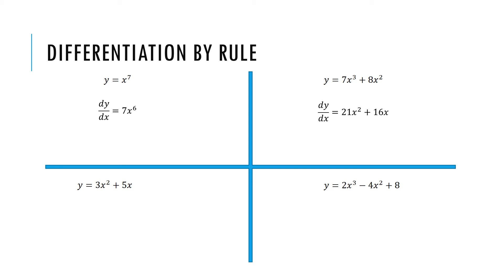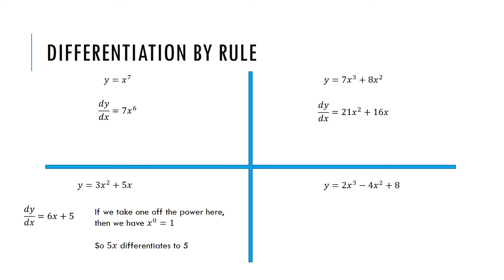Now the bottom left: y equals 3x squared plus 5x. The differential is 6x plus 5. I multiplied 3 by 2 to get 6x, taking 1 off the power leaves 1, so I write 6x. For the 5x term, you'll notice the x disappears leaving just 5. If you take 1 off the power there, you're left with x to the 0, and anything to the power of 0 equals 1. So 5x differentiates to 5. In general: any number with an x next to it differentiates to just the number — 5x to 5, 6x to 6, 7x to 7, minus 7x to minus 7.